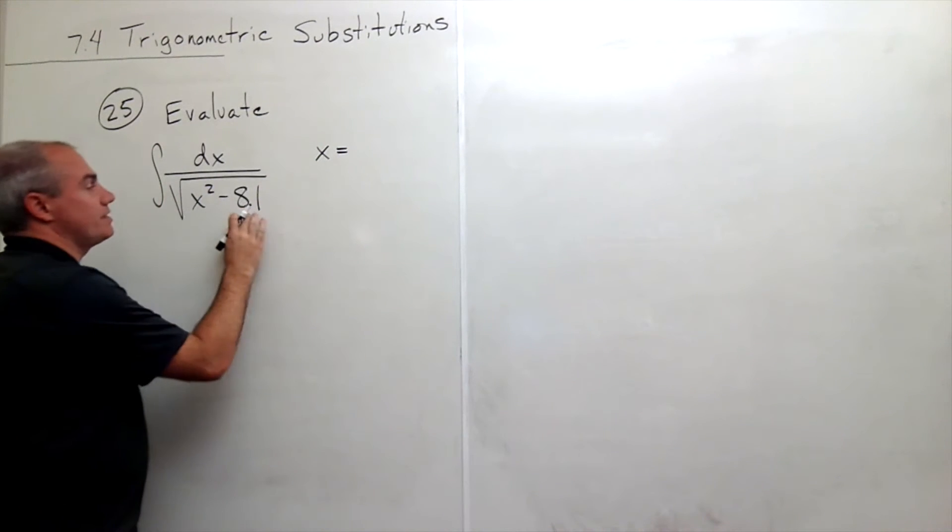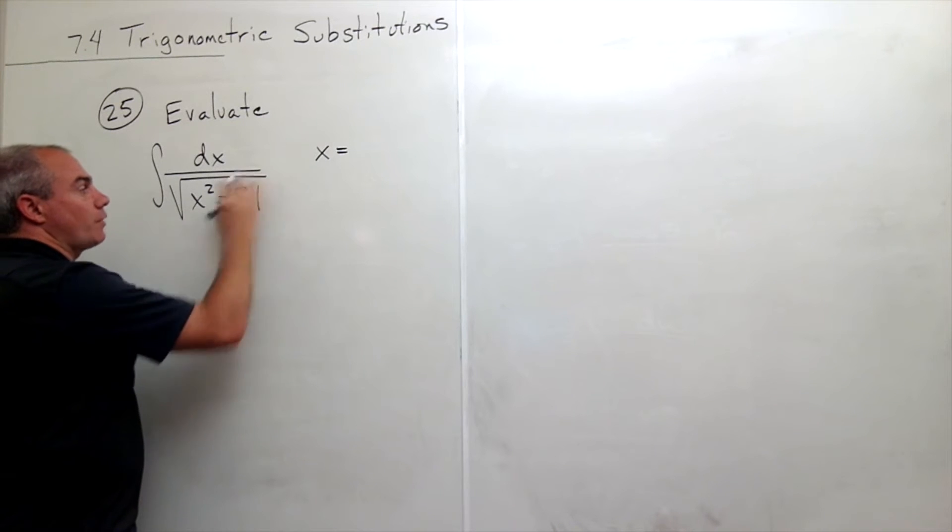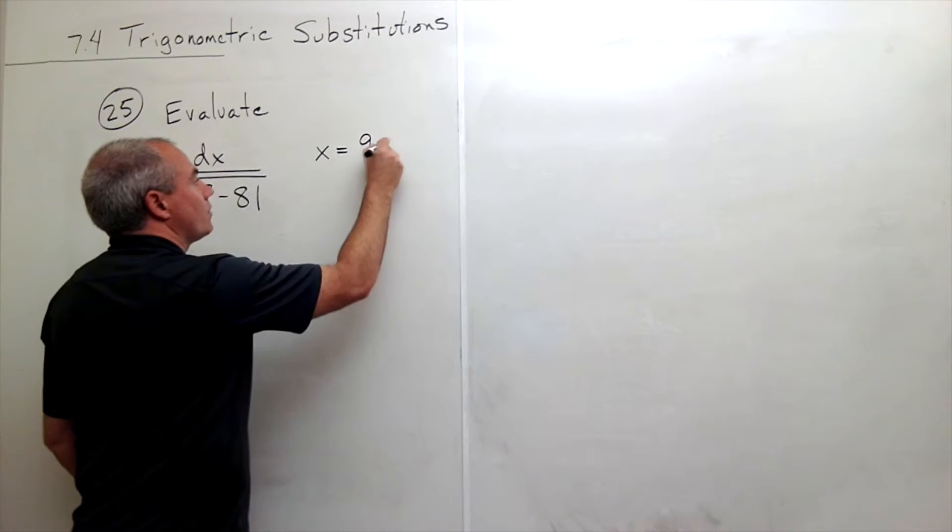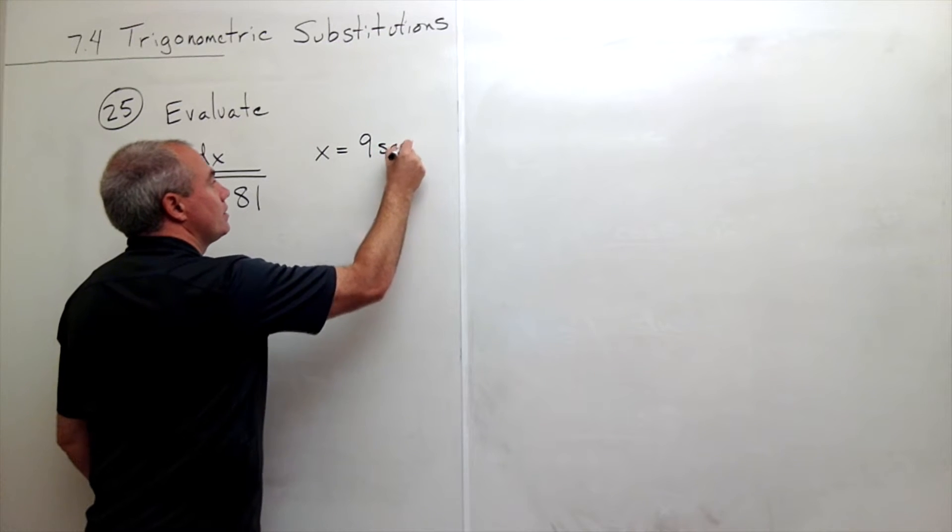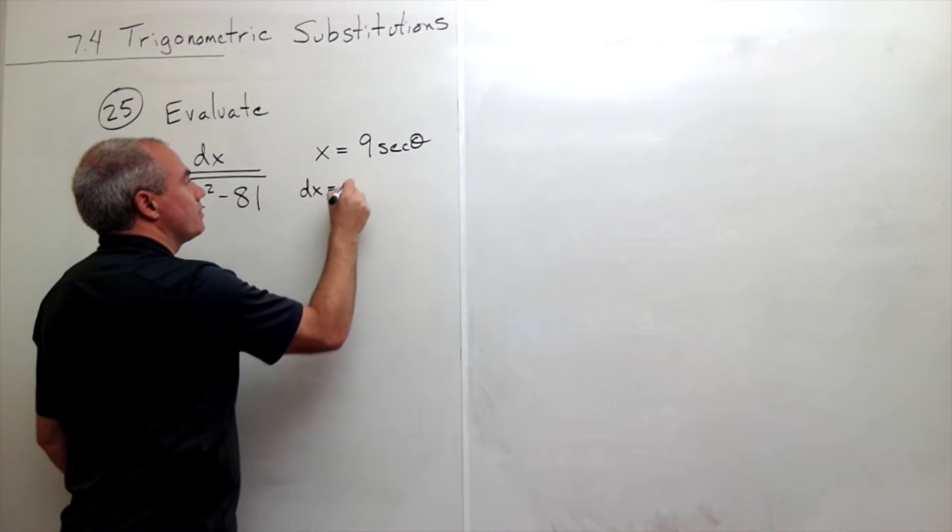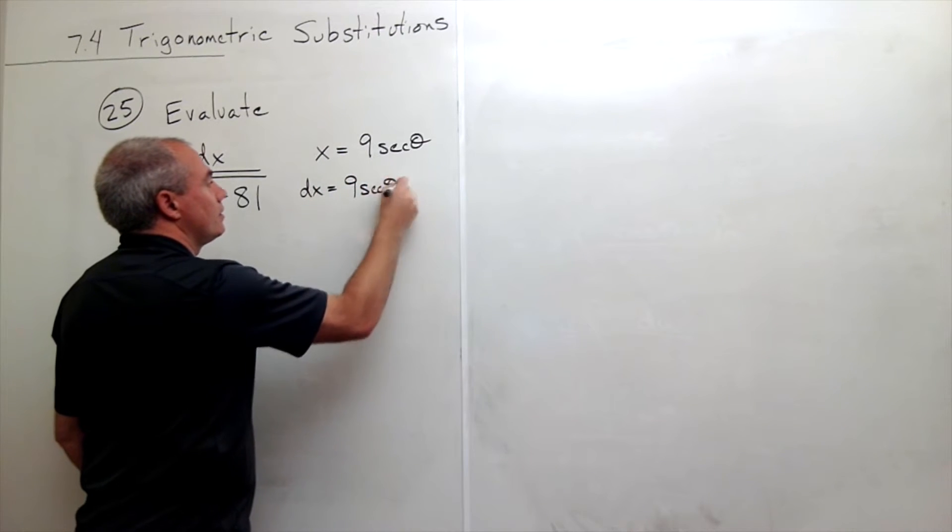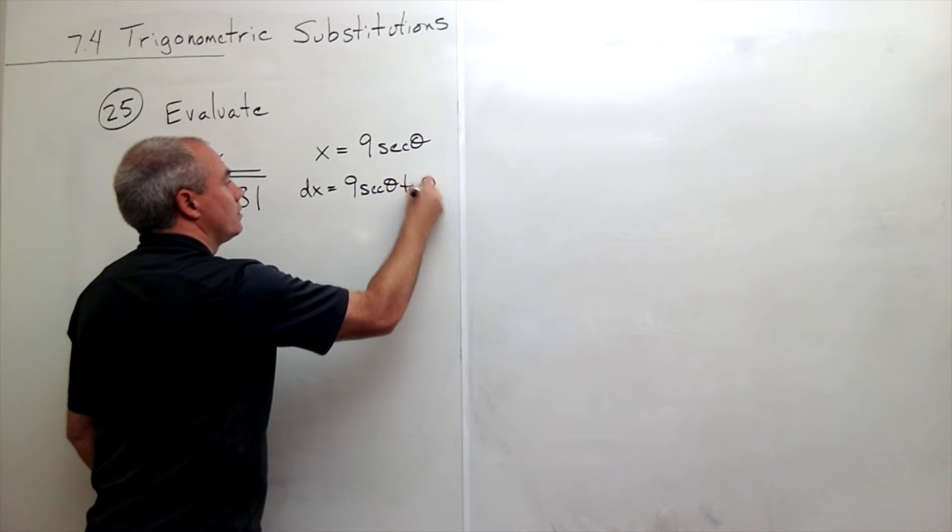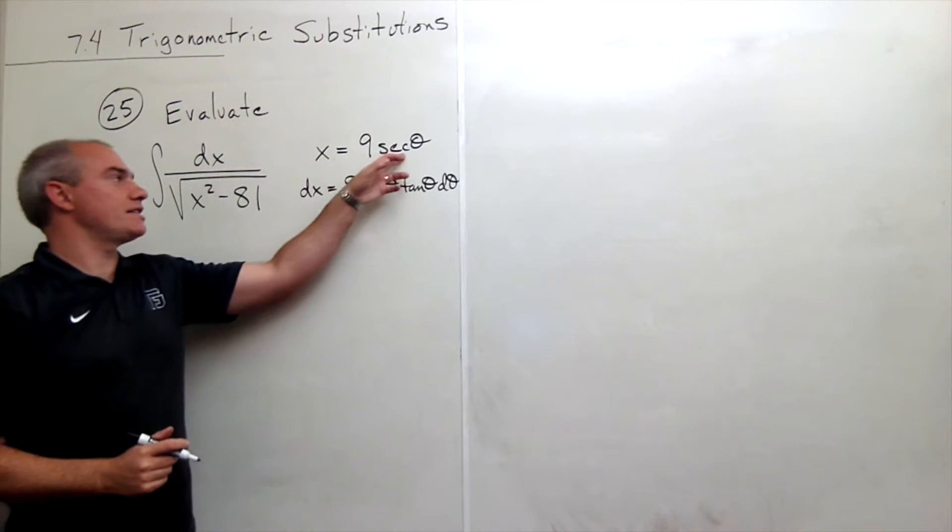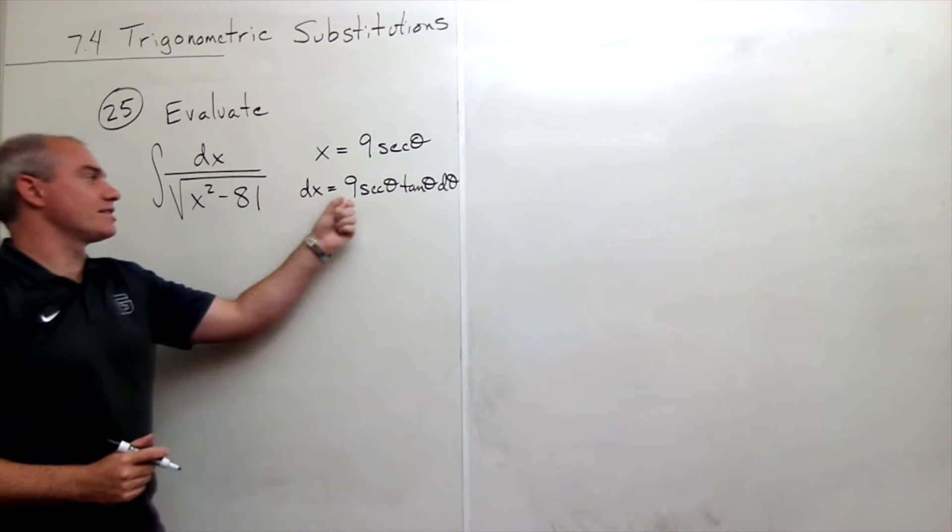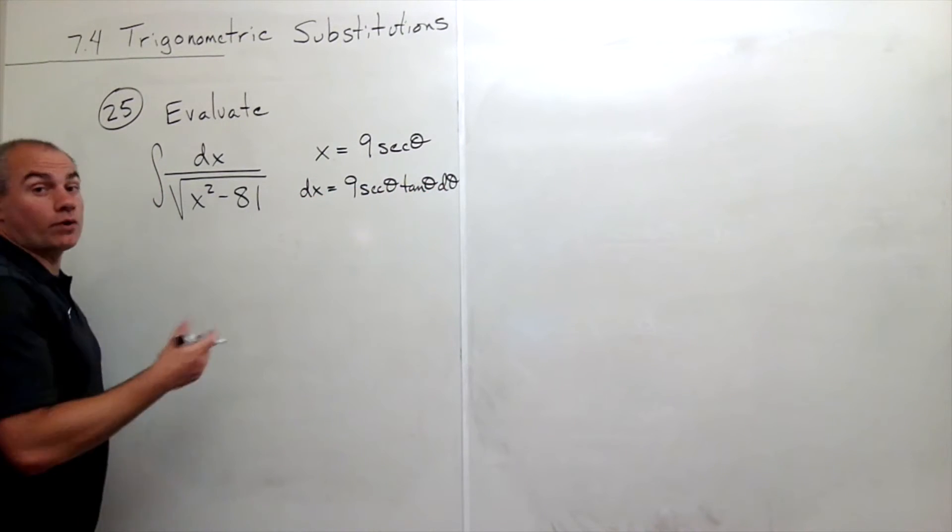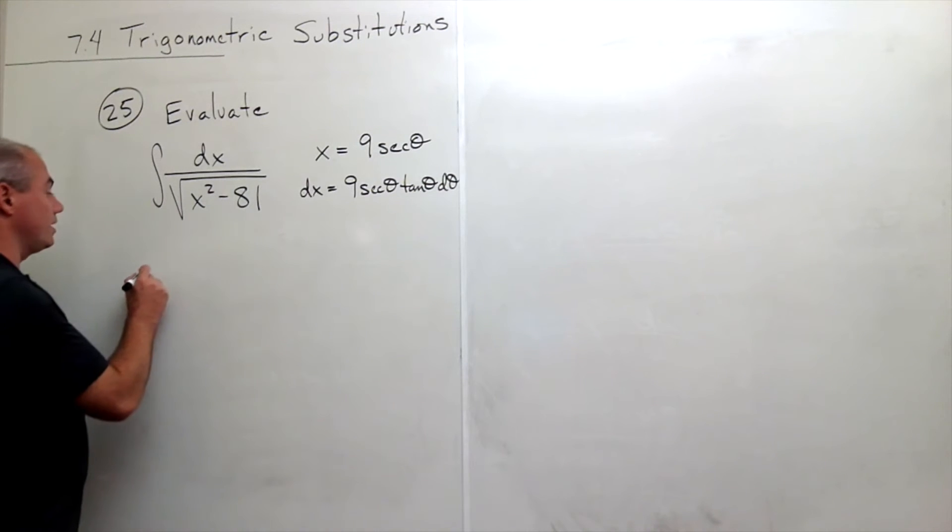In this case, a squared is 81, so a is 9, giving us x equals 9 secant theta. That means dx equals 9 secant theta tangent theta d theta. So x is 9 secant theta, dx is 9 secant theta tangent theta d theta, and now we're ready to make the substitution.